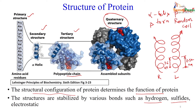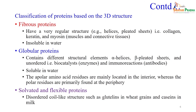Similarly, there are beta sheets, beta turns, and random coil. Based on the 3D structure of a protein, we classify them into three categories. The first is fibrous protein — they have very regular structure with plated sheets and helices. Fibrous proteins are insoluble in water; examples include collagen, keratin, and myosin.